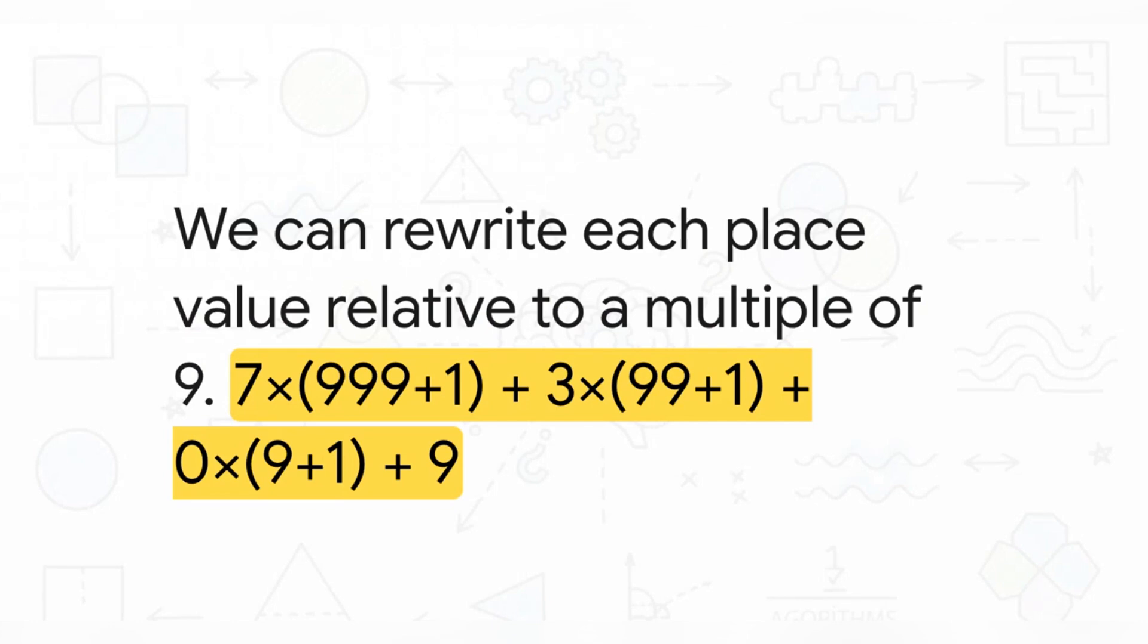Okay, now for the really clever part. This is the trick. We're going to rewrite each of those place values, but in a very specific way. We're going to relate it to a multiple of 9. So instead of 1,000, we'll write 999 + 1. Instead of 100, we'll do 99 + 1. And for 10, it's 9 + 1. See the pattern emerging?